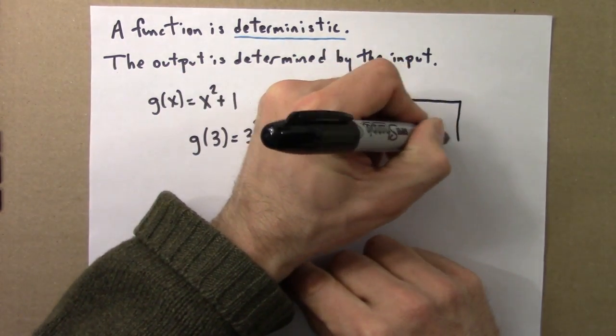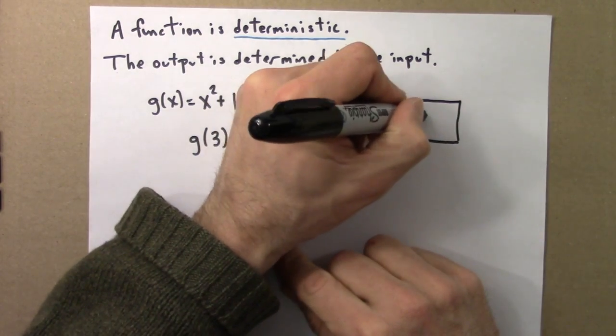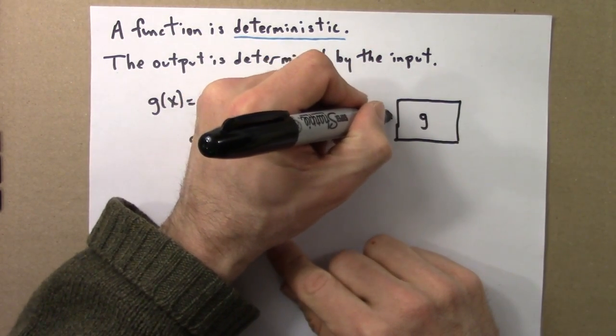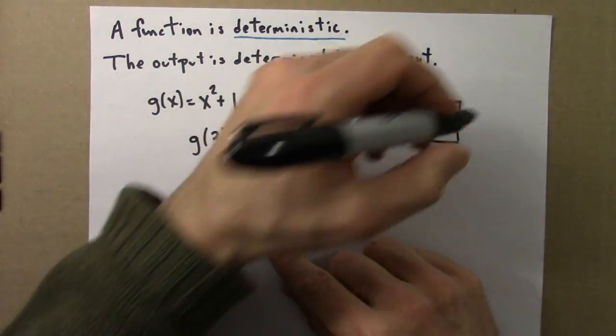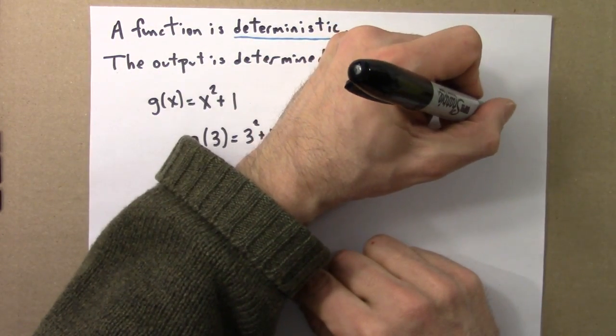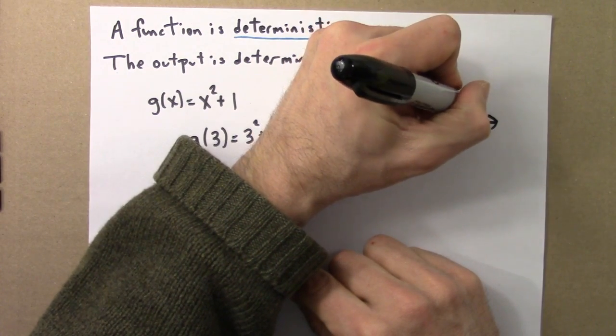And I can write it this way also. g, there is three coming in, and three has g act on it, and the output is ten.